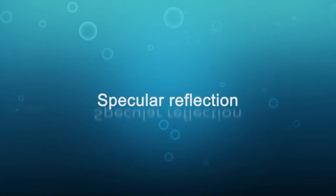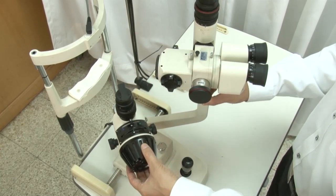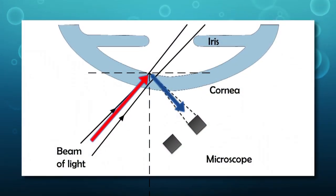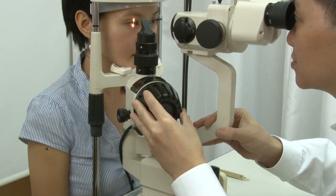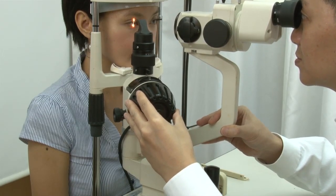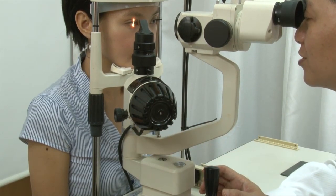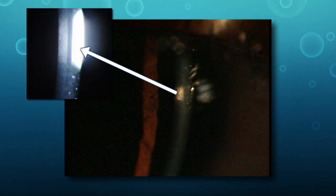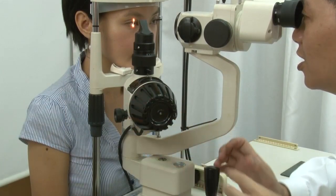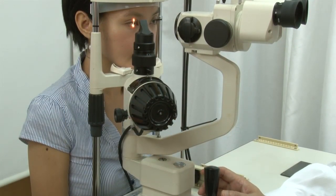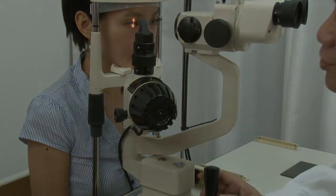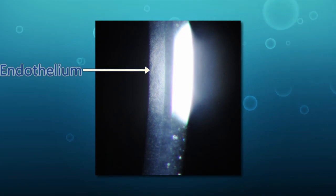Specular reflection: first, set the angle between the light source and the observation system so that the reflection path of the light source overlaps with the observation path. Adjust the slit width to about 2 millimeters, similar to the parallelepiped. Set the light source to maximum intensity and magnification initially to low. A bright specular reflex should appear in one eyepiece. Zoom to the highest magnification — a bright image can be seen with a dull image adjacent to it. Adjust the joystick slightly to bring the endothelium into focus. Specular reflection is primarily used for viewing the endothelium, whose structure looks like a mosaic pattern.